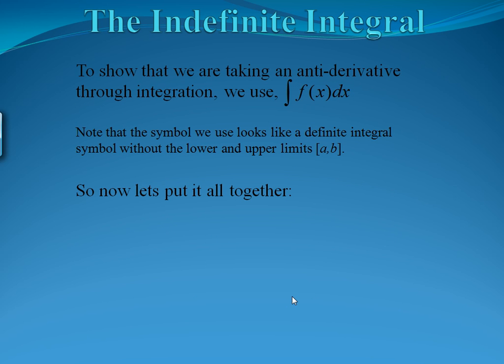This is what we call the indefinite integral. To show that we're taking an antiderivative through integration, we use the integral of some function dx. Note that the symbol looks a lot like the definite integral we've been working with, but without the lower and upper limits a and b. If we integrate a function f of x dx, which was a derivative of some function, we get the original function back plus some constant c.